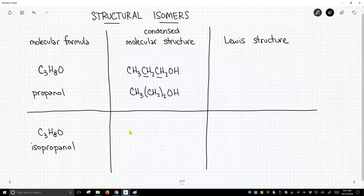For isopropanol, it's a little bit different. We're actually going to have two CH3 groups connected to a CH and then an OH.